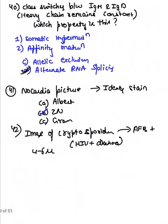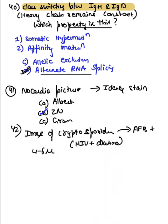A question asked the reason for class switching between IgM and IgD, with the heavy chain remaining constant. The answer is alternate RNA splicing. For Nocardia — it is weakly acid-fast, 0.5 to 1 percent acid-fast — so the answer was Ziehl-Neelsen (Gene Nelson) stain.